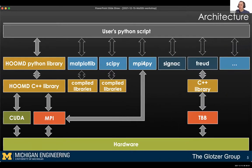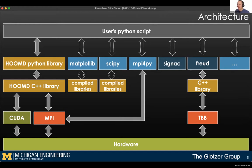The architecture starts from the bottom: we're running on hardware using CUDA and MPI. That's all in a C++ library written for performance, which exposes Python hooks using the Python library to provide that high-level clean interface. The user's Python script creates objects that are ultimately running CUDA on hardware and communicating across multiple nodes with MPI. This all interoperates with other Python tools in the scientific Python ecosystem, such as Matplotlib and SciPy. Two other tools developed in our group are Signac and Freud.